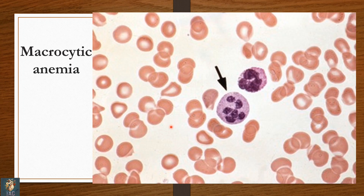Here is a neutrophil having six lobes. Whenever you find a hypersegmented nucleus of a neutrophil — known as a hypersegmented neutrophil — the diagnosis is macrocytic anemia, along with large-sized RBCs. Again, the size of the RBCs will be compared with the nucleus of small lymphocytes present on the same smear. Macrocytic RBCs plus hypersegmented neutrophil equals macrocytic anemia.